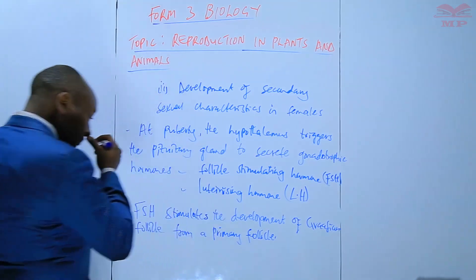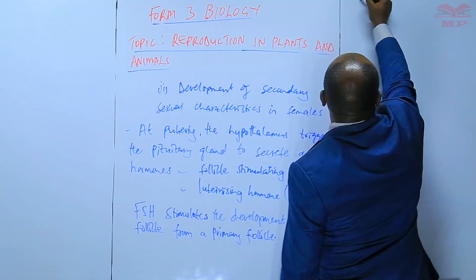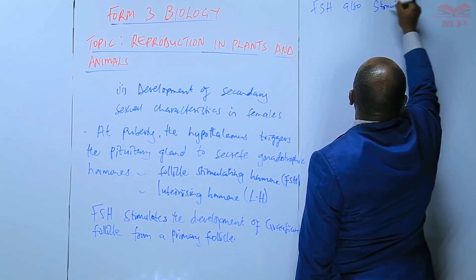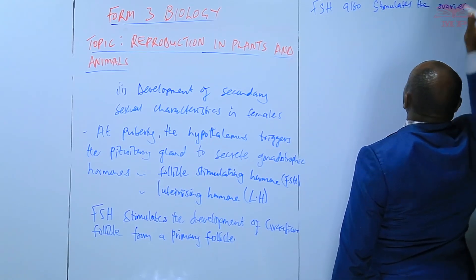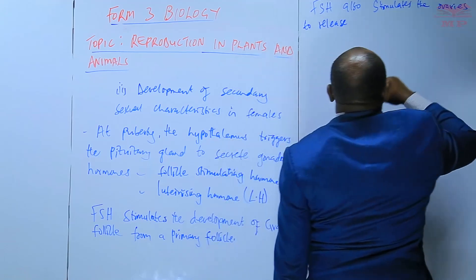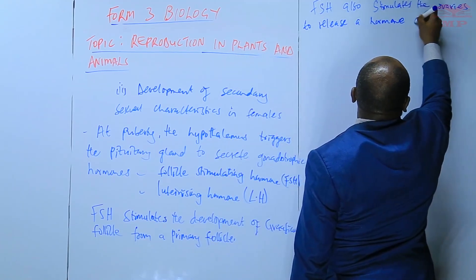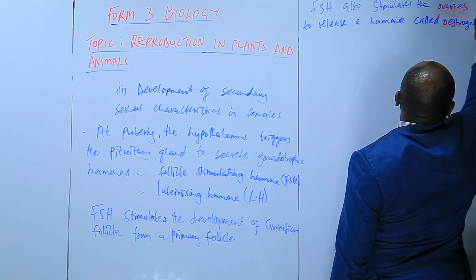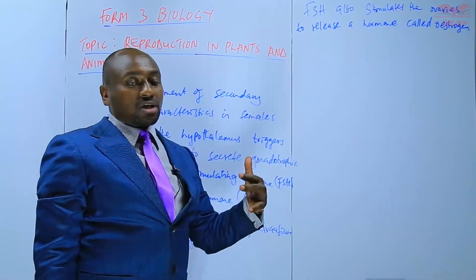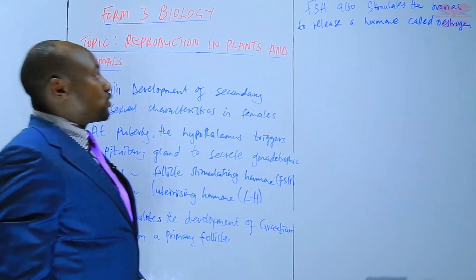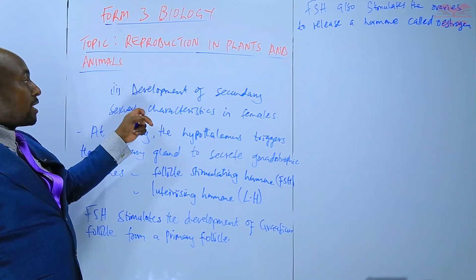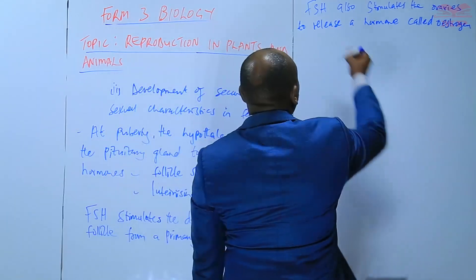That is one of the roles played by the follicle stimulating hormone. FSH also stimulates the ovaries to release a hormone called estrogen. So follicle stimulating hormone instructs the ovaries to release another hormone called estrogen. This estrogen is then responsible for the development of secondary sexual characteristics in females.